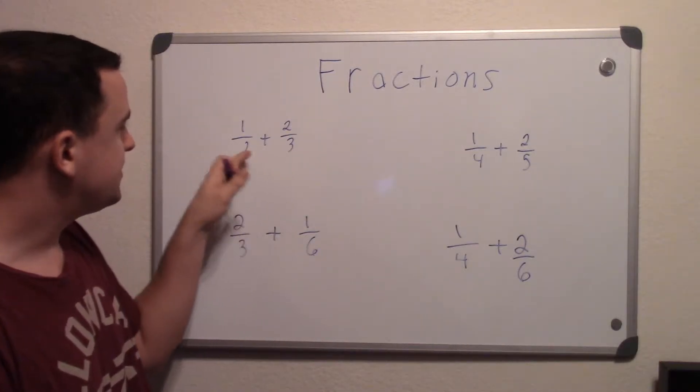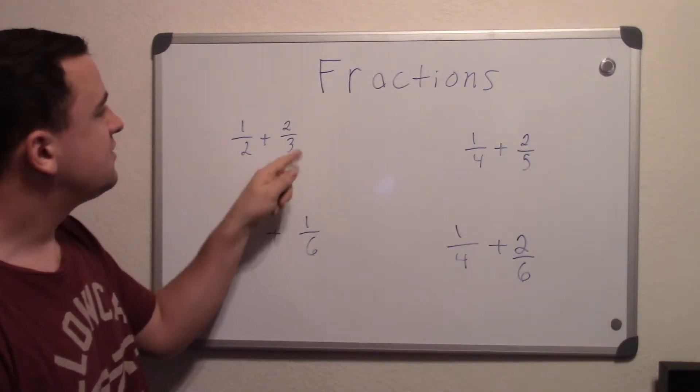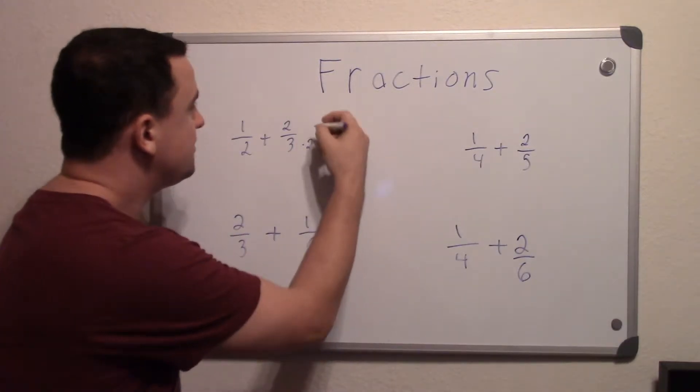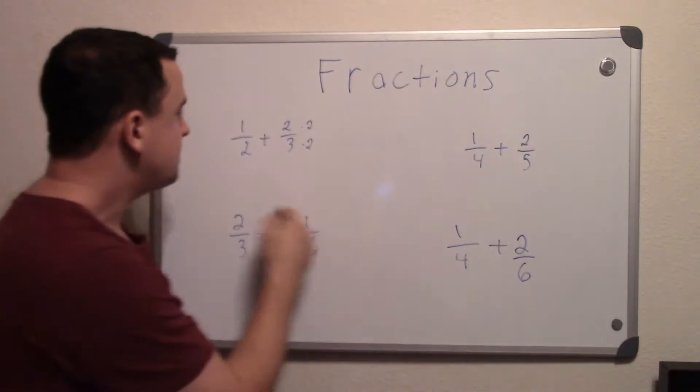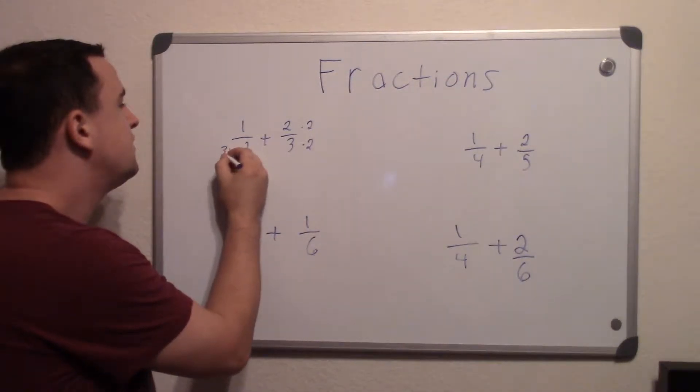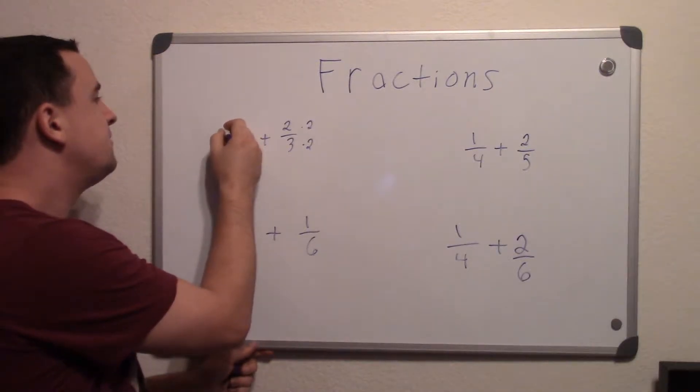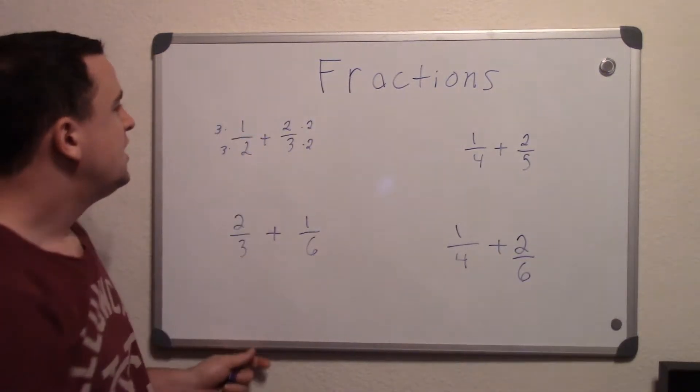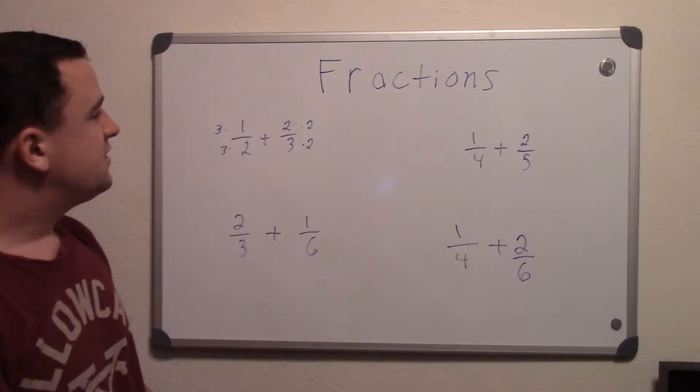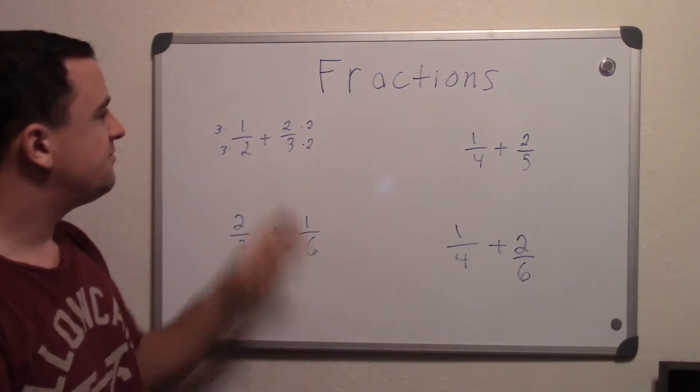The reason why you're doing that is because, let's say for example, we said our common number is 6. So I have to multiply this one to get 6 by 2, so times 2 to the top as well. Over here, I have to multiply by 3, and up here I have to multiply by 3.